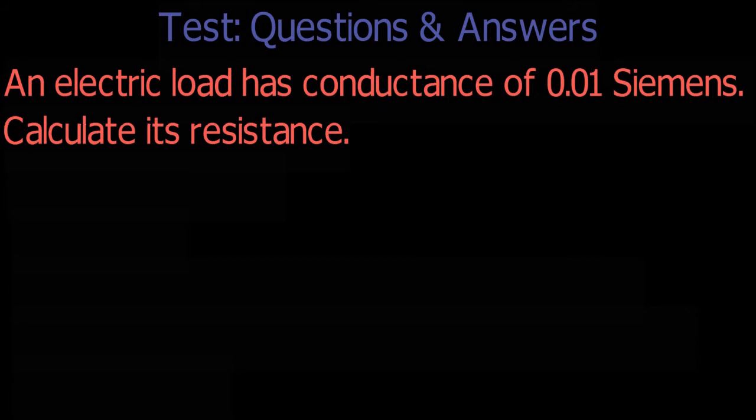Question number 1. An electric load has conductance of 0.01 Siemens. Calculate its resistance.